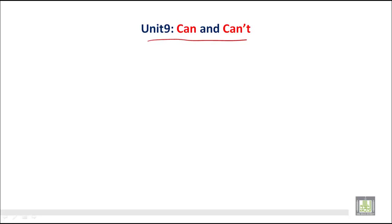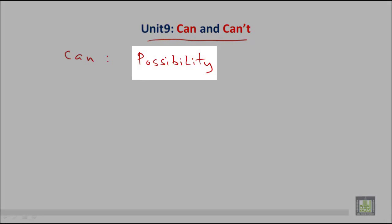Can't is just the negative of can. So, can we use it for possibility? Can we use it for possibility? For example, you can say I can manage to do that.